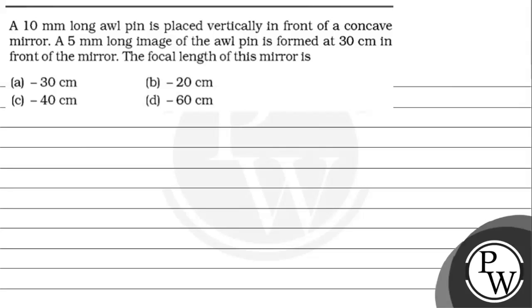The question says that a 10 mm long awl pin is placed vertically in front of a concave mirror. A 5 mm long image of the awl pin is formed at 30 cm in front of the mirror.